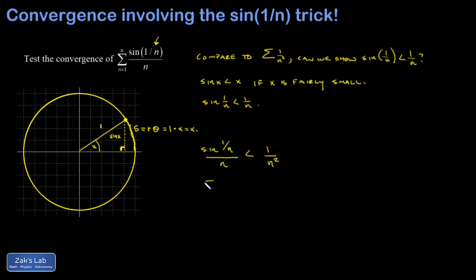And then I'll say the sum of 1 over n squared, n goes from 1 to infinity, converges. If you like, my argument there is that it's a p series with p equals 2. And with every single term in sine 1 over n less than every single term in a convergent series, it's guaranteed to converge by direct comparison.